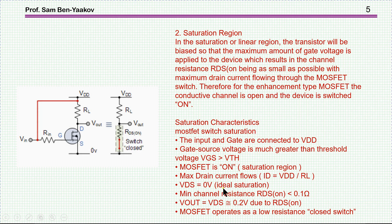This is of course for ideal case, and then minimum channel resistance RDS on smaller than 0.1 ohm. Again, this will be for a particular transistor, and then Vout is 0.2. Again, it's a special case. And MOSFET operates as low resistance, closed switch. Okay.